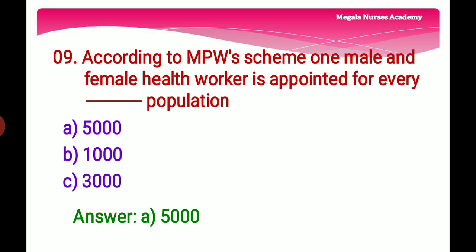Ninth question: According to the Multipurpose Health Worker Scheme, one male and one female health worker is appointed for every — Option A: 5,000 population, Option B: 1,000, Option C: 3,000. The right answer is Option A, 5,000 population. The concept of multipurpose health worker was introduced in 1974 for delivery of healthcare at the sub-central level, covering 5,000 population in plain areas.